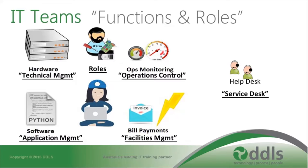Now let's apply some ITIL terminology — not much has changed, just the names. Teams or groups are now called functions. Technical management focuses on the hardware side. Application management focuses on the software side. Operations Control primarily focuses on monitoring of operations. The team that support us with supplies, electricity, and telecommunication links is labelled Facilities Management, and our helpdesk has been relabeled Service Desk. We also have a collection of roles for refined accountability and responsibility. Now we know what IT functions and assets we have to manage IT systems, we can get on with managing our IT services.